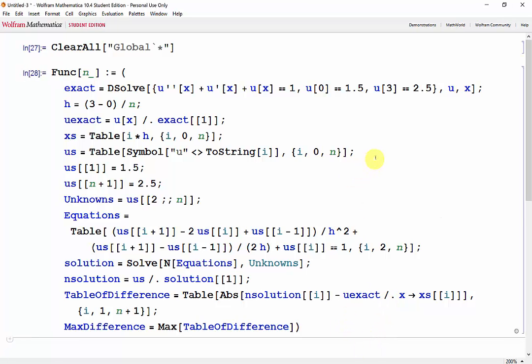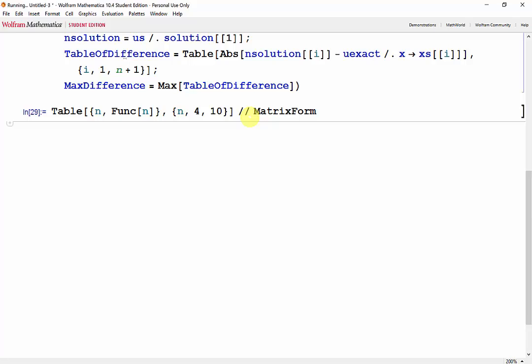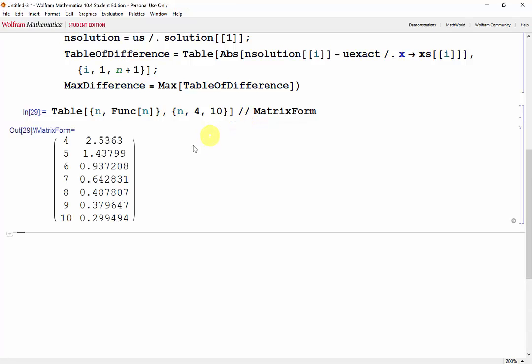Now let's test it with the Table function with n from 4 to 10, just so we can get an h less than 1. So Table[n, Func[n]], where n goes from 4 to 10, and we'll see that in MatrixForm. As we can see, the error decreases as we increase n, as expected.